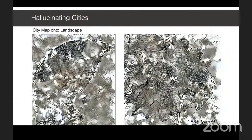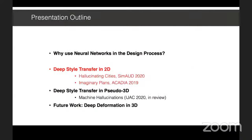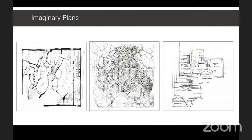Here are more examples of our experiments transferring topographical maps onto the streets of Florence to create new landscapes, as well as examples of transferring Venice onto the moon and Mount Rainier to create new city maps. We also performed experiments in style transfer to generate novel building floor plans, which brings us to our next project, Imaginary Plans. In this project, we wanted to transition from modeling texture and structure in single images to modeling the style and structure captured across datasets of images, motivating our choice to use generative adversarial neural networks — GANs.